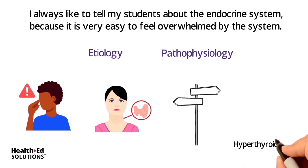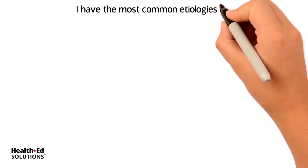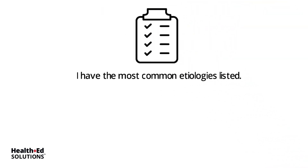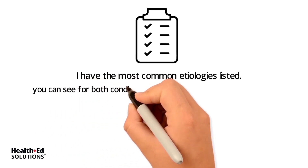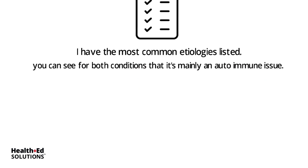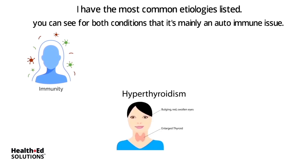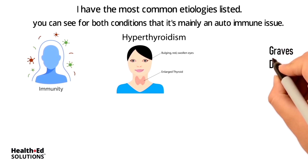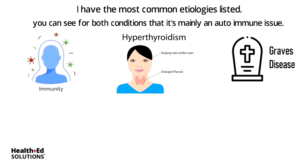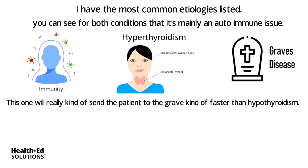We're going to kick it off and talk about hyperthyroidism. I have the most common etiologies listed first at the very top, and you can see for both conditions that it's mainly an autoimmune issue — our own immune system starts attacking the thyroid. With hyperthyroidism, this autoimmune disease is called Graves disease, and this one will really kind of send the patient to the grave faster than hypothyroidism.